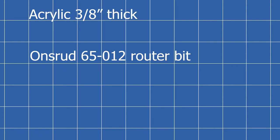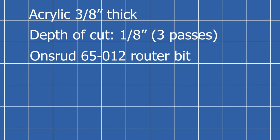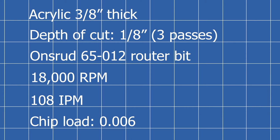We cut the 3/8 of an inch in three passes at 18,000 rpm and 108 inches per minute which means the chip load was 0.006. The recommended fits and speeds from Onsrud are also in the description below.